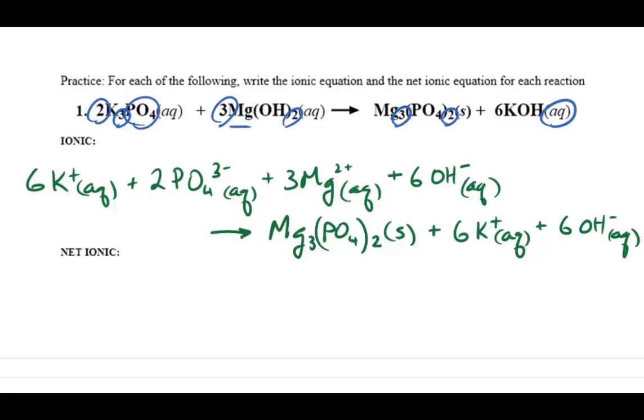Notice all the ions on both sides of the equation are balanced. Six potassium ions, six hydroxide ions, the three magnesium ions are in the precipitate, and the two phosphate ions are also in the precipitate.